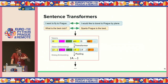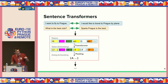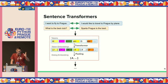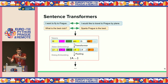To train sentence transformers, the most standard pattern is to provide pairs of semantically related data. For instance, a pair like 'I want to fly to Prague' and 'I would like to travel to Prague by plane' — these are labeled as similar. We can also pass related things like question-and-answer pairs: 'What is the best club?' and 'Sparta Prague is the best' — one is an answer to the other, so they should be similar.